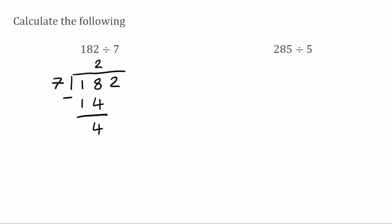Once we've done the subtraction, we then bring the next digit down. So we've got this 2, and we're going to bring that down and put it next to our 4. So we've now got 42. Now we want to see how many times does 7 fit into 42. Well, that fits in 6 times exactly because 7 times 6 is 42. So when we subtract those numbers, we get 0, meaning there's going to be no remainder. So our final answer would just be 26. So 182 divided by 7 is 26.